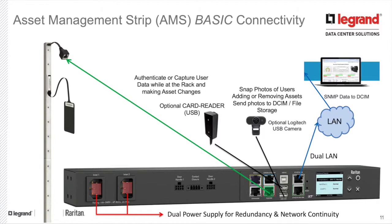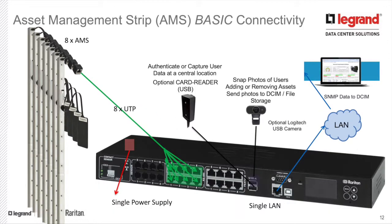If we look at a smart rack controller, the smart rack controller connects the asset strip to the same port as the rack PDU. You can still connect your USB and your card reader. This controller has dual power source coming into it directly, and is typically used for racks that do not have an intelligent rack PDU.